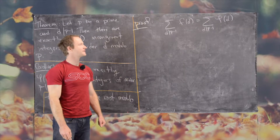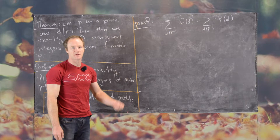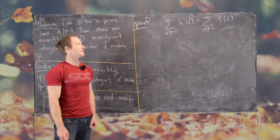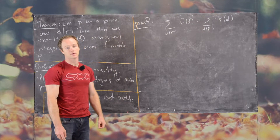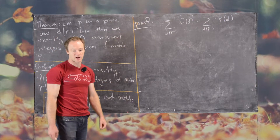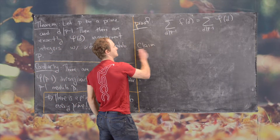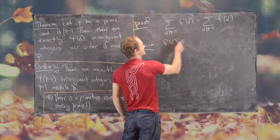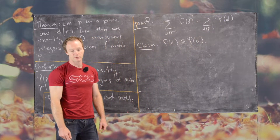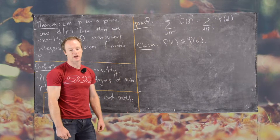We have the sum over all divisors of P−1 of F(D) equal to the sum of φ(D) over the same range. The next step is to show that F(D) ≤ φ(D). Clearly what we really want is equality, but by showing this inequality and the fact that the two sums are equal, we'll be able to conclude equality for each term.